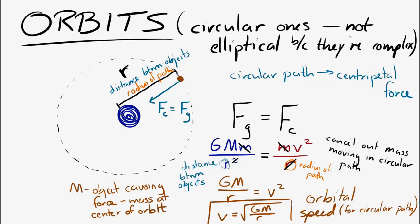We could do the same thing with the earth and the sun to find the orbital speed of the earth, or for a planet around another star. It works no matter what, as long as you have an object traveling in a circular orbit.